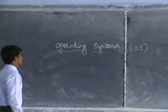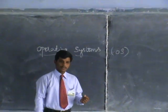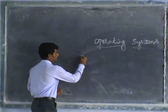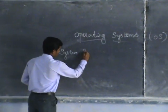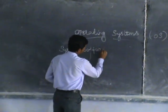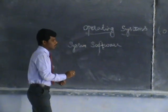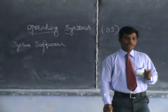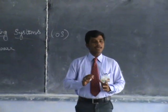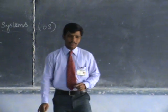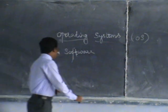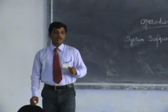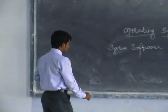Welcome to Operating Systems, also called OS. An operating system is nothing but a system software — a set of instructions that are carried out to perform particular tasks. This system software is particularly used to control, monitor, and organize the systems.